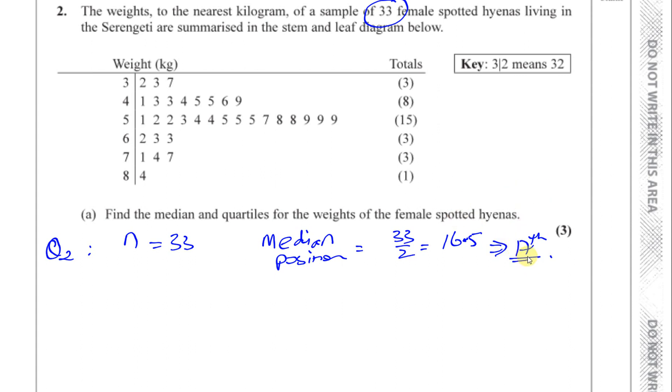Some people do it a different way, n plus 1 over 2, which will also give you 17. But I prefer to use it this way, especially when we're dealing with quartiles, where it makes life a bit easier to deal with. So whichever way you do it, we're looking for the 17th term. So here we've got 3 terms in this category and 8 terms in that category, so that's 11. I'm doing the running total now. You can say the cumulative frequency. We've got 3 terms and 11 terms. That's going to be 3 plus 8, 11.